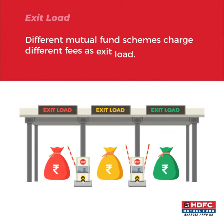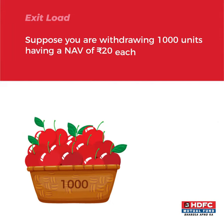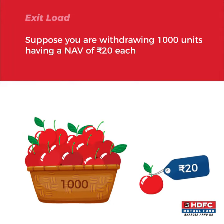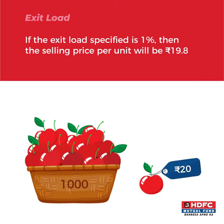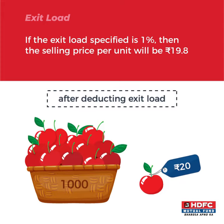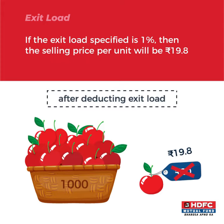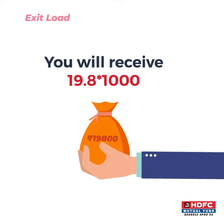Different mutual fund schemes charge different fees as exit load. Suppose you are withdrawing 1,000 units having a NAV of rupees 20 each, and if the exit load specified is 1%, then the selling price per unit will be rupees 19.8. Hence, you will receive 19.8 into 1,000, that is rupees 19,800.